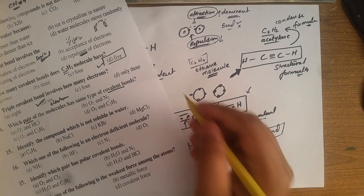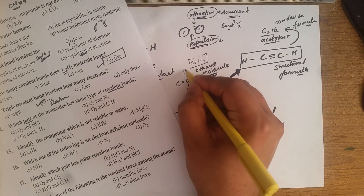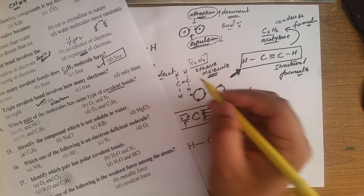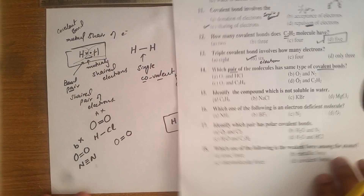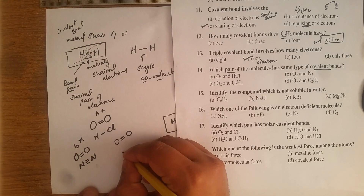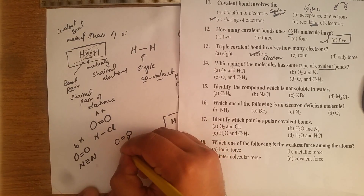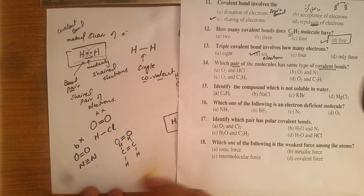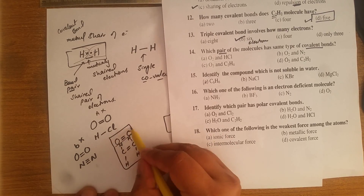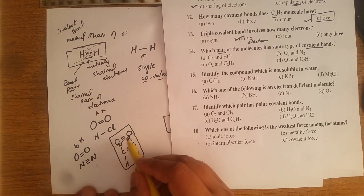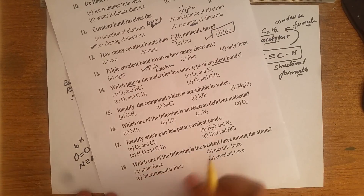C₂H₄ — do you know what C₂H₄ is? C₂H₄ is the ethylene molecule. Structurally, it contains a double covalent bond. So oxygen (O₂) has a double covalent bond and C₂H₄ (ethylene) also has a double covalent bond — that makes sense.